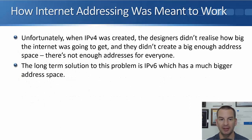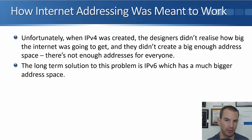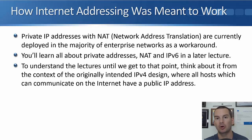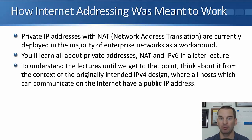Unfortunately when IPv4 was created the designers didn't realize how big the internet was going to get, so they didn't create a big enough address space. There's not enough IPv4 addresses for every host that actually needs one communicating on the internet, so IPv4 ran out of addresses. The long-term solution is IPv6, which has a much bigger address space — IPv4 is a 32-bit address, IPv6 is a 128-bit address. Private IP addresses with NAT, which is Network Address Translation, are however currently deployed in the majority of enterprise networks as a workaround. So IPv6 is the long-term solution but today private addresses with NAT is actually more commonly deployed.